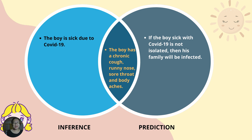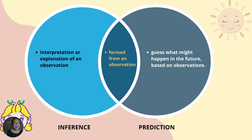Here is the observation, found at the center of the Venn diagram: the boy has a chronic cough, runny nose, sore throat, and body aches. Based on this, we can predict that if the boy is sick with COVID-19 and is not isolated, then his family will be infected.